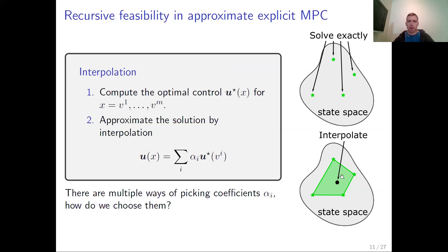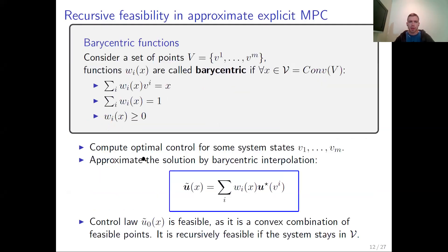Let's consider how recursive feasibility can be guaranteed in approximate explicit MPC. Interpolation is defined as a weighted sum of sampled points for the optimal control law, where these coefficients are functions of x. It turns out that barycentric functions are a very nice candidate for this purpose. Any set of functions for a given set of points is called barycentric if they satisfy three properties: they should have the interpolating property — a weighted sum of sample points should give the current state x — they should sum to one, and they should be non-negative. The last two properties are directly related to the convex combination property.